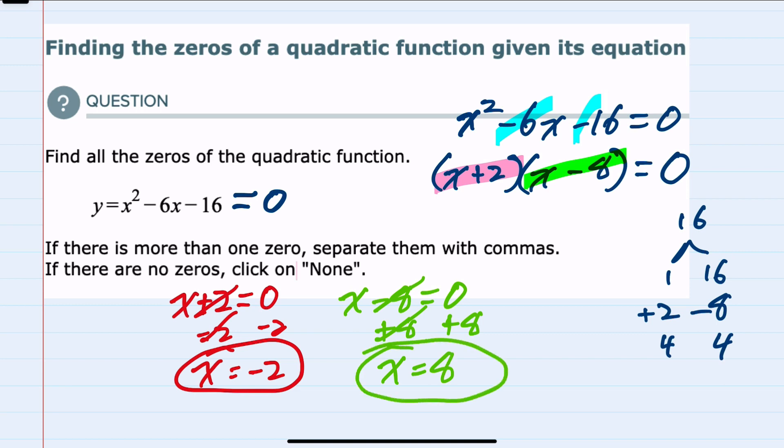Just to mention what would be none, that would have been the case if we weren't able to factor the original quadratic. We wouldn't have been able to set each one of the factors equal to zero to find the zeros, so we would have chosen none in that situation.